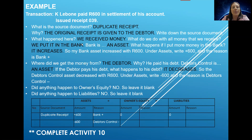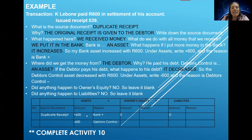So what happened here? We received money. What do we do with all money that we receive? We put it in the bank. Bank is an asset. So what happens if I put more money in my bank account? It increases. So my bank asset increased with that 600 Rand that Caleb Borne paid us to settle his account. So under assets, under the amount, you write plus 600 Rand, and your reason is bank.